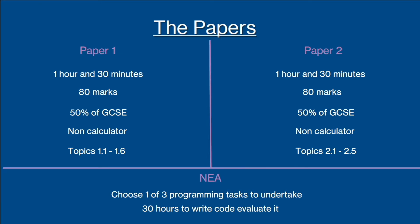The course is structured in a way that you will take two one and a half hour long papers for computer science at the end of year 11. Each of these are worth 80 marks and 50% of your final GCSE grade.